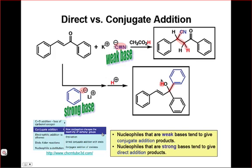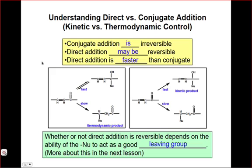This is a convenient rule of thumb to remember, but what are the underlying reasons that really govern why weak bases add conjugate and strong bases tend to add directly, or 1-2? We can get at the answer to this question by considering the kinetic and thermodynamic properties of the key steps of direct and conjugate addition.